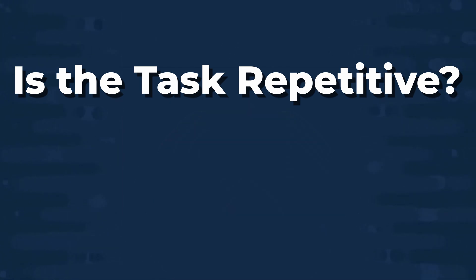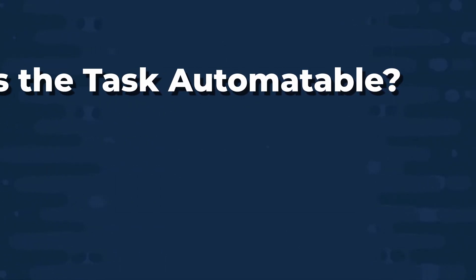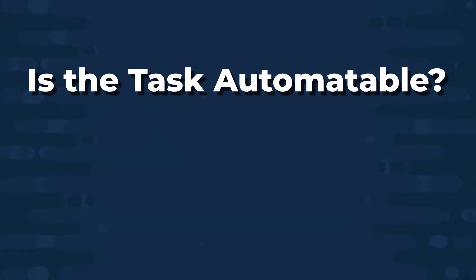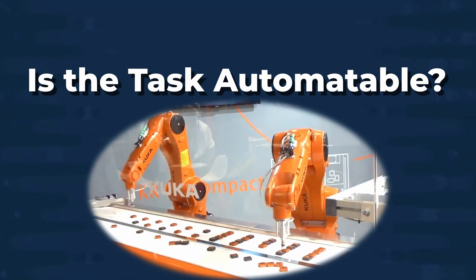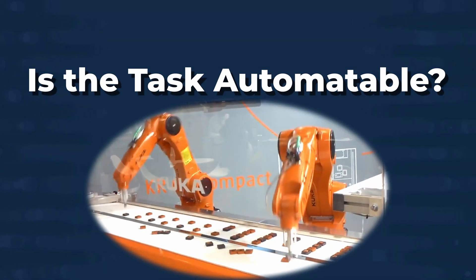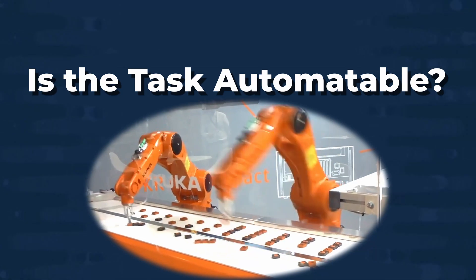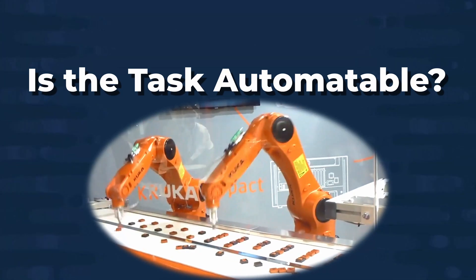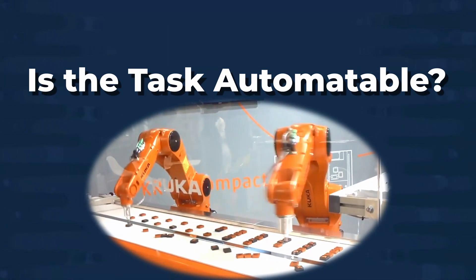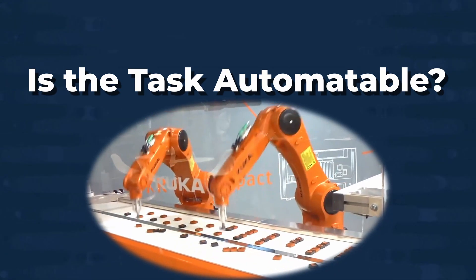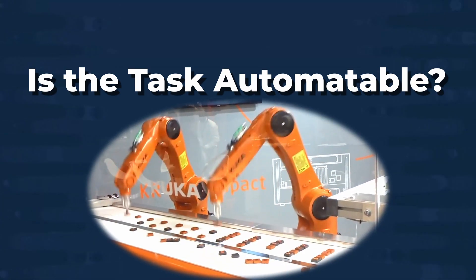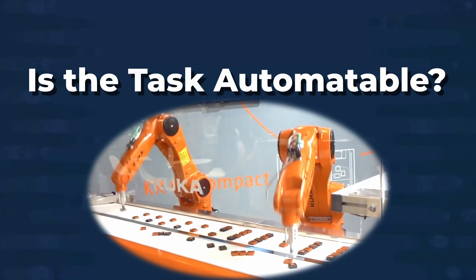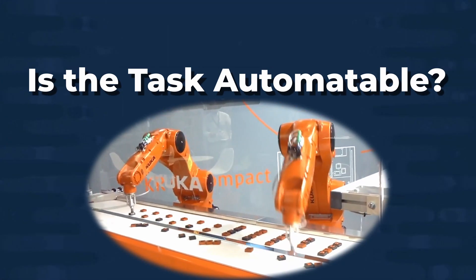That brings us to our next point: is the task automatable? The way that we usually look at a task being automatable is if a machine could accomplish the task just as well as a human. Human capital is expensive, so you don't want to be wasting it on a task that can be automated. Now, if human judgment is essential to the task, then there's a good chance that it isn't toil and it's not something that you should be automating.